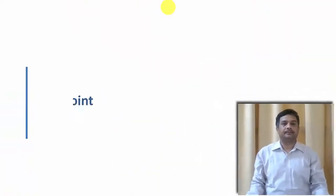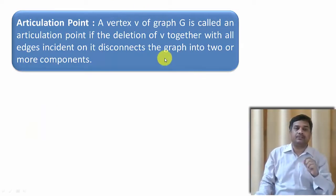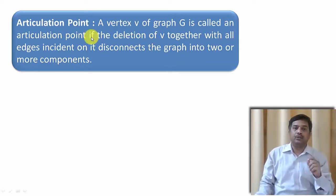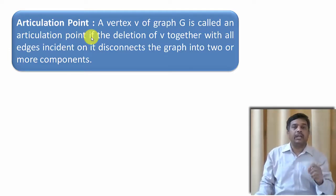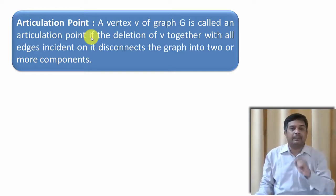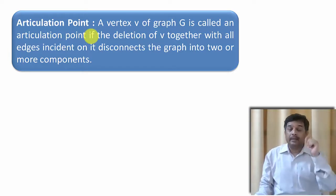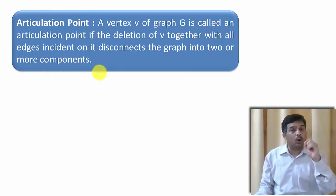So let us start. In our previous videos, we have learned what is Depth First Search. We are going to see the application of Depth First Search, that is to find Articulation Point. Basically, a vertex V in a graph G will be called the Articulation Point if we are going to delete that particular vertex, and then this particular graph will become a disconnected graph. It means that whenever we are deleting a vertex, along with that, whatever edges are associated with that particular vertex will also be deleted.